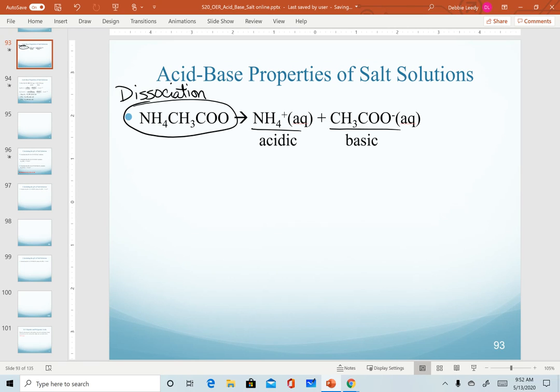In order to predict whether this entire salt is going to be acidic, basic, or neutral, we have to look at how acidic and how basic ammonium and acetate are as ions. In order to do that, we need to calculate a Ka value for ammonium and a Kb value for acetate.